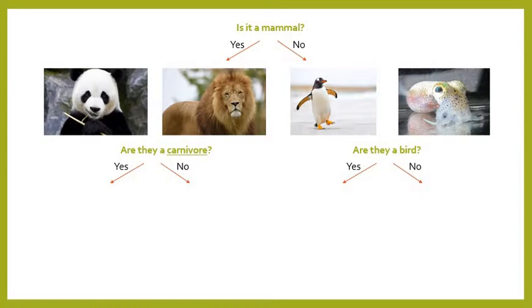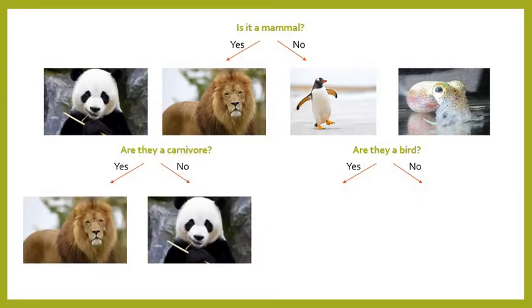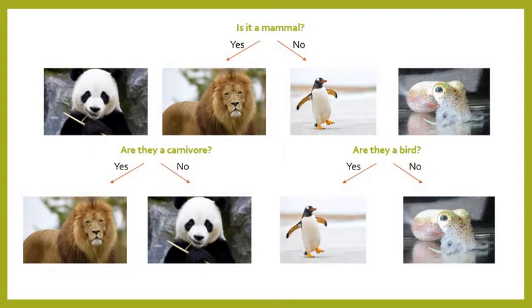We've split those four animals into two groups, but we can split them further by asking more questions. On the mammal side, we ask: are they a carnivore? A carnivore is a meat eater. Out of our panda and lion, the lion is the carnivore and the panda is a herbivore — an animal that only eats plants. An omnivore eats both. For the non-mammals, we ask: are they a bird? The penguin is a bird and the squid is not. We've now split those animals into four different groups using a classification system.